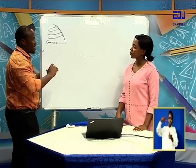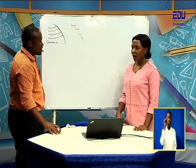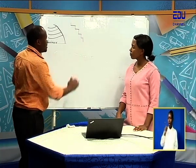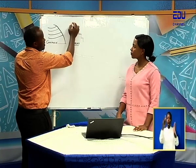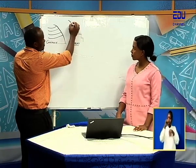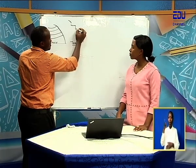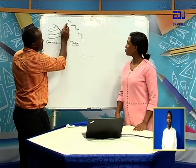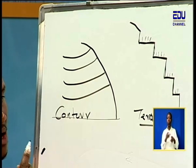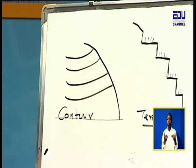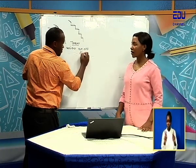Then we have terrace farming. When we talk about terraces, they form things that look like stairs. We call them terraces. The person makes a staircase feature and on each flat part, that is where they plant the crops. Even if the soil is eroded from one level, it falls to the next level — it does not proceed further. So these terraces reduce the flow of runoff water that causes erosion.